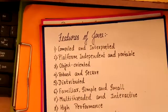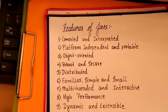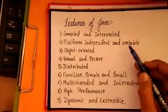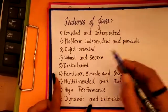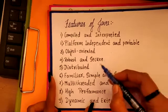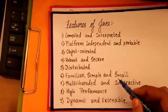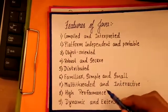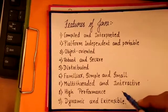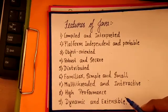Here are the features of Java: compiled and interpreted; platform independent and portable; object-oriented; robust and secure; distributed; familiar, simple and small; multithreaded and interactive; high-performance; and dynamic and extensible.